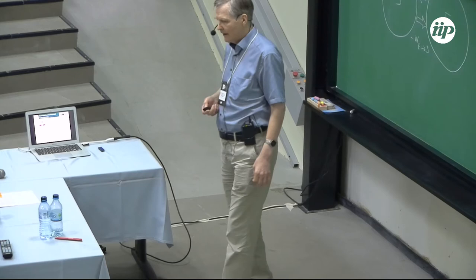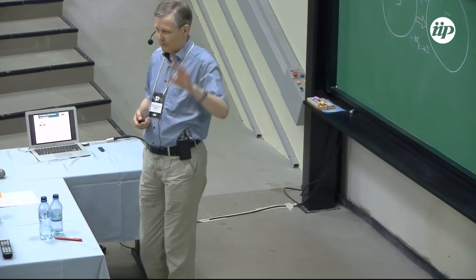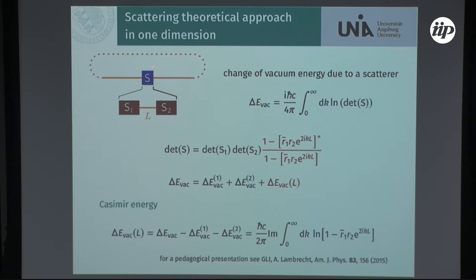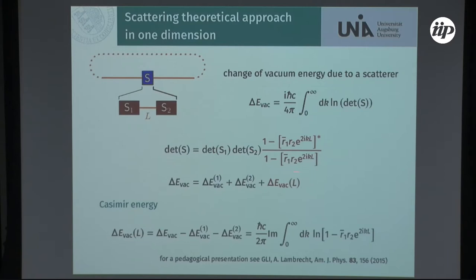Now this quantity will be infinite because you have infinitely many modes, so that's not the Casimir effect. What you need to consider is a situation where this one scatterer is split into two scatterers — two objects, the two planes — which you put at a distance L. Then something interesting happens: the determinant factorizes into several terms. There's one factor which just gives the determinant of the first scatterer, and a contribution arising from the second scatterer. These two terms have nothing to do with the Casimir effect, and they are actually also infinite. And then there's a third contribution which comes from scattering of waves between the two scatterers.